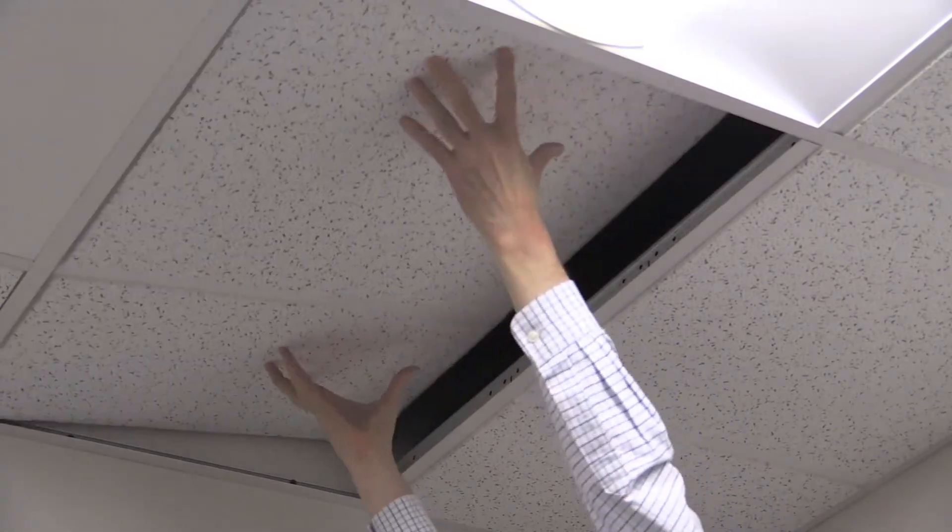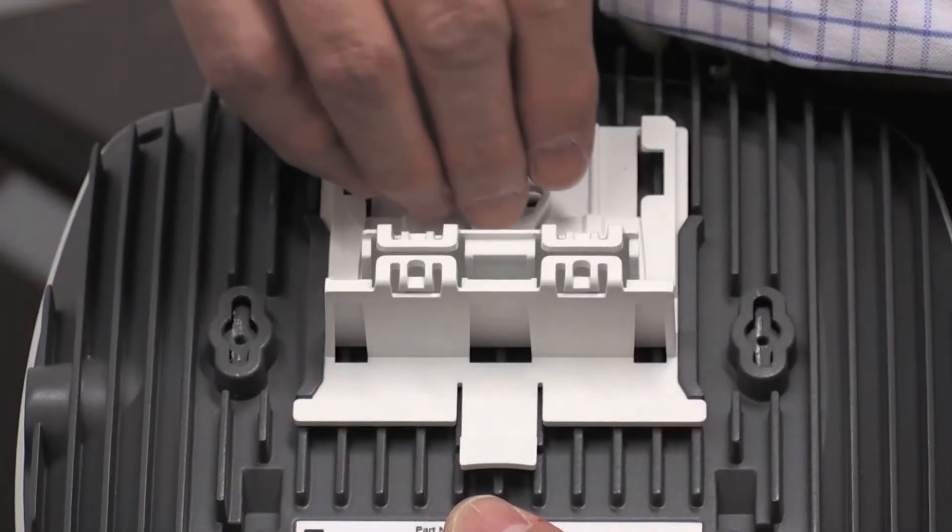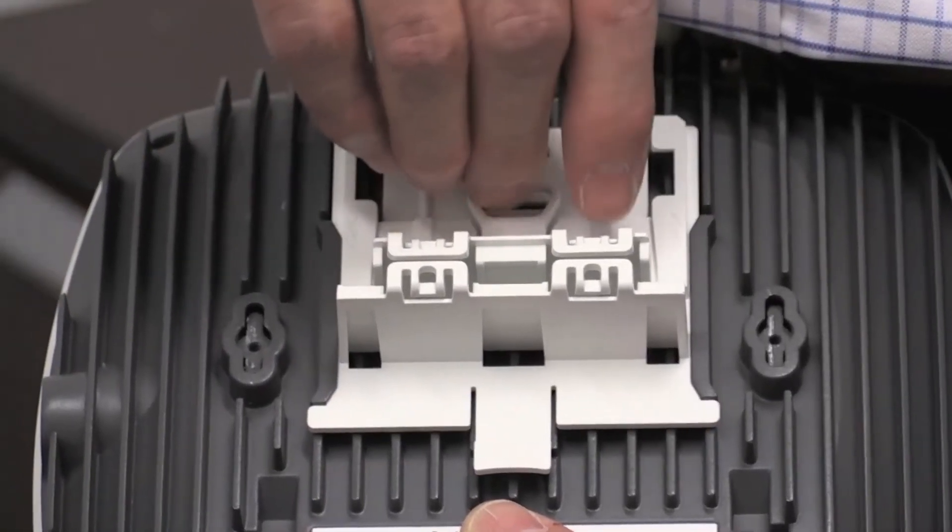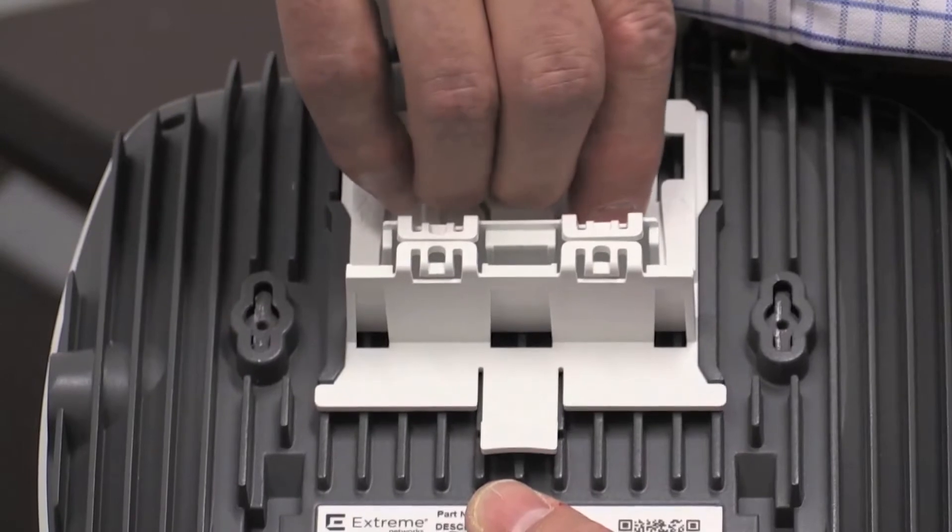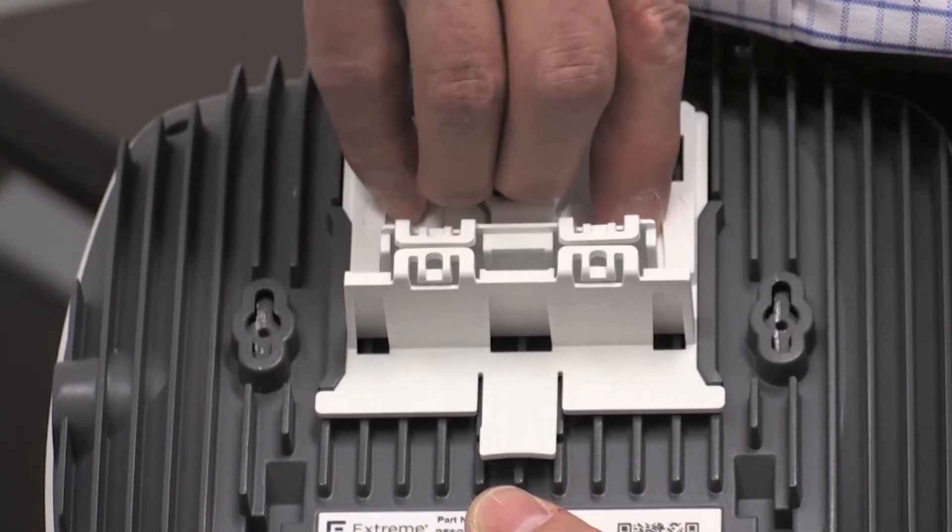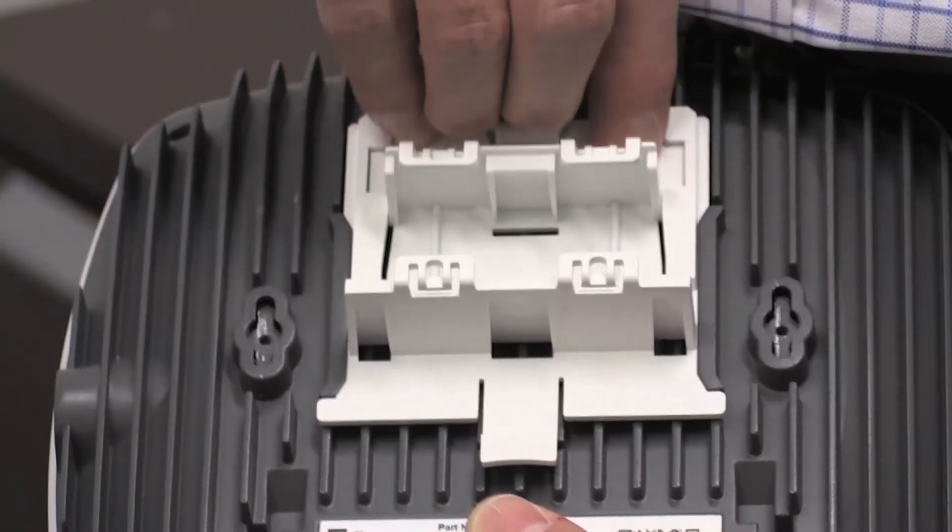The first step is to move the ceiling tiles out of the way where one wants to put the AP. Open the t-bar by slightly lifting the locking latch and sliding it open so the distance between the holding parts is larger than the t-bar.